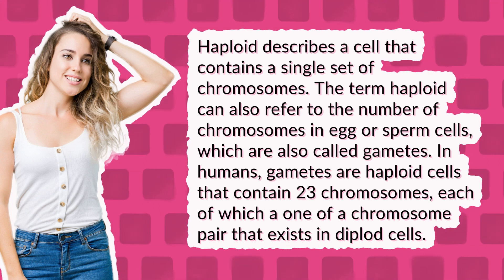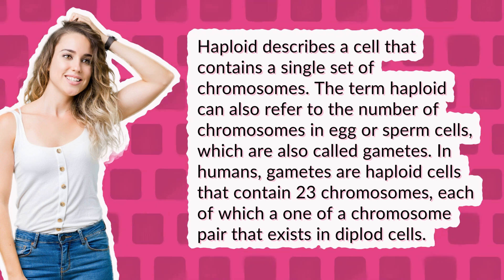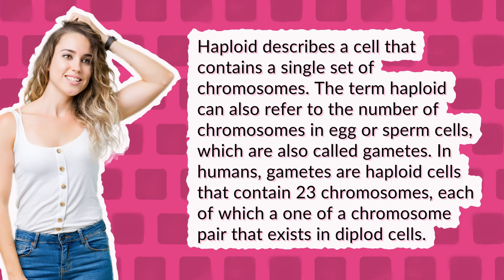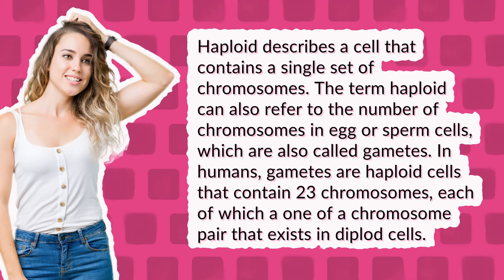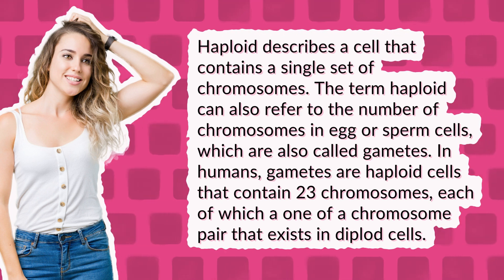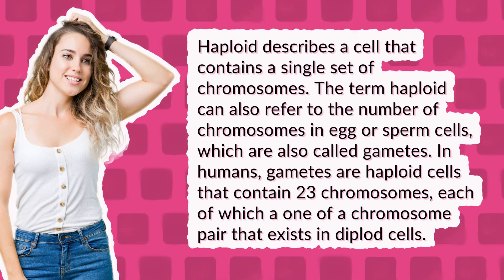In humans, gametes are haploid cells that contain 23 chromosomes, each of which is one of a chromosome pair that exists in diploid cells.